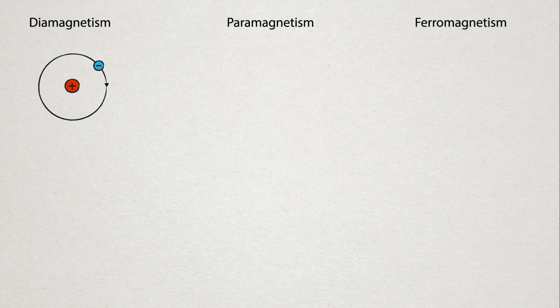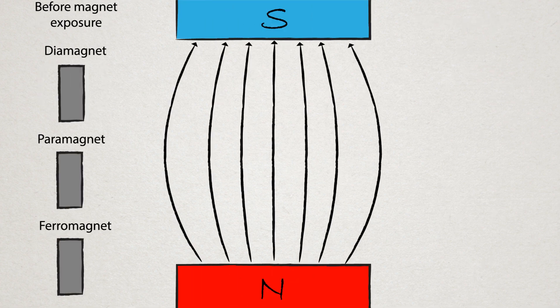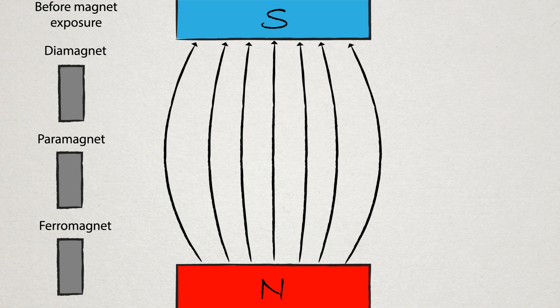Generally, these little magnetic fields cancel out. That is, the electrons orbiting the atom randomly orientate so there is no net magnetic field.